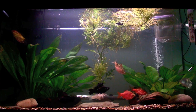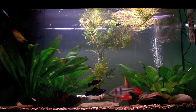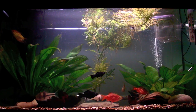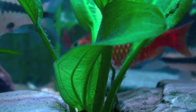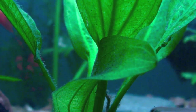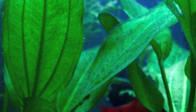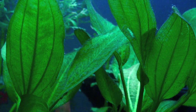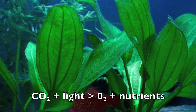Today I'm going to talk about the importance of carbon dioxide in a planted aquarium. Carbon dioxide, or CO2, is an inorganic molecule that is essential in the process of photosynthesis. Technically, photosynthesis is a process whereby light energy from the sun is transformed into chemical energy. Put simply, CO2 plus light gives oxygen and food for the plant.